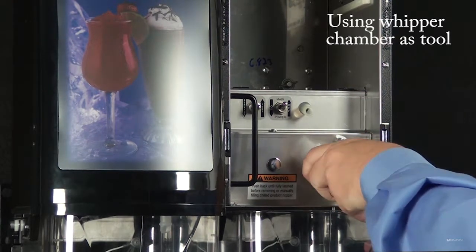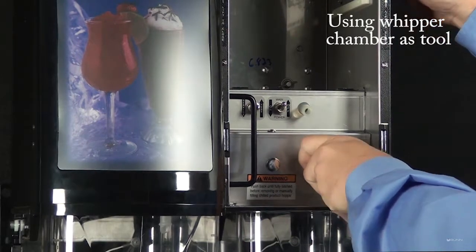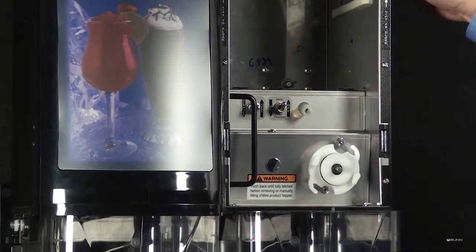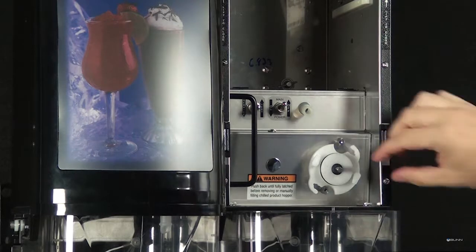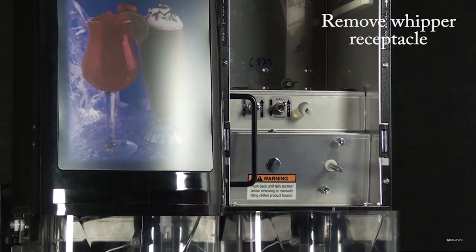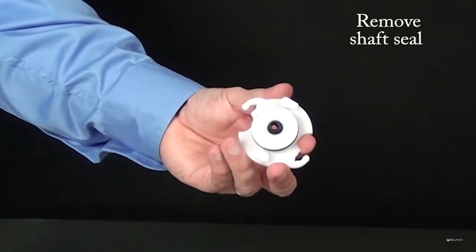Twist the whipper chamber receptacle clockwise and pull it off the motor shaft. Remove the shaft seal from the whipper chamber receptacle.